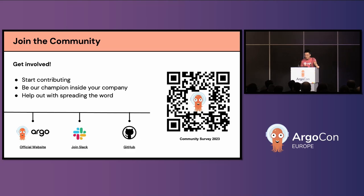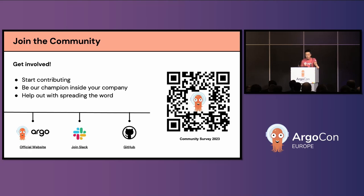Please get involved with the Argo project. You can start contributing through feature requests, fixing issues, doing implementations, writing documentation, or simply helping answer questions in the Slack channel — we have a very vibrant Slack channel in the CNCF Slack. You can also be a champion in your company: use Argo and help your teammates learn more about it. Share your Argo experience — good or bad, we appreciate both kinds of feedback to make the product better. There is a QR code for our community survey this year — scan it and give us your feedback.